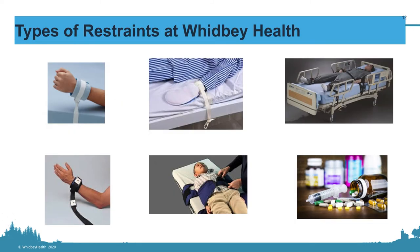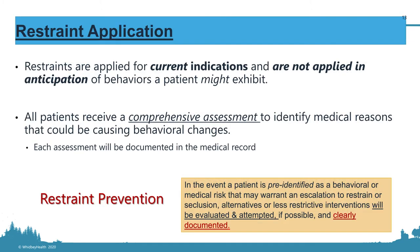These are the types of restraints Would Be Health is using. Going around, you have soft nonviolent restraints, mitts, locking restraints, a papoose board — start thinking of that as a restraint even when suturing a kid's face — and chemical restraints. Restraints are only applied for current indications, not what a patient might do or has done in the past. Patients must also have a comprehensive assessment documented while in restraints.